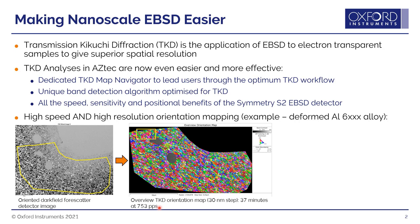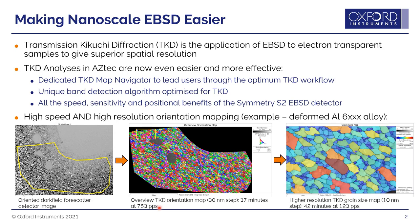We then identify a region to analyze in more detail. Here we see a high resolution analysis — the scale bar is 2 microns, with a step size of 10 nanometers. This is measured at a slower speed to get higher precision data at about 123 patterns per second.